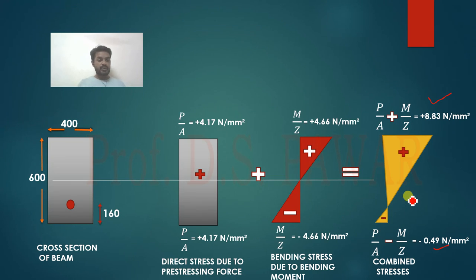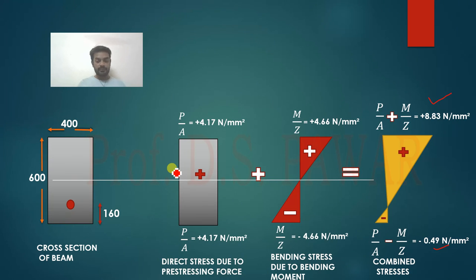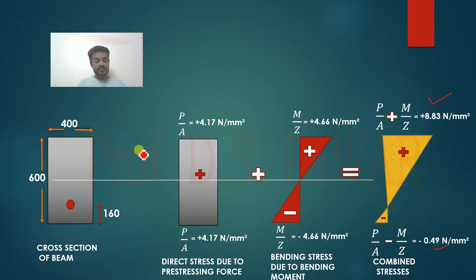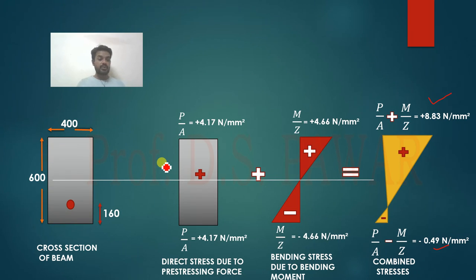This is how we calculate stresses in a beam provided with a bent tendon using the load balancing concept. This is the end of this session. In the next session we are going to see when the tendon is provided with eccentricity at the ends. Hope you understood this session. Thank you very much.